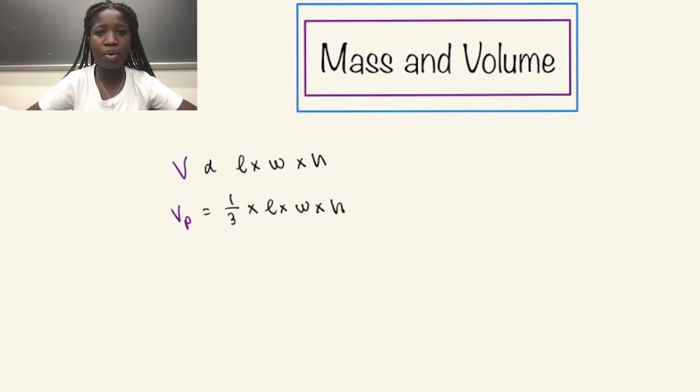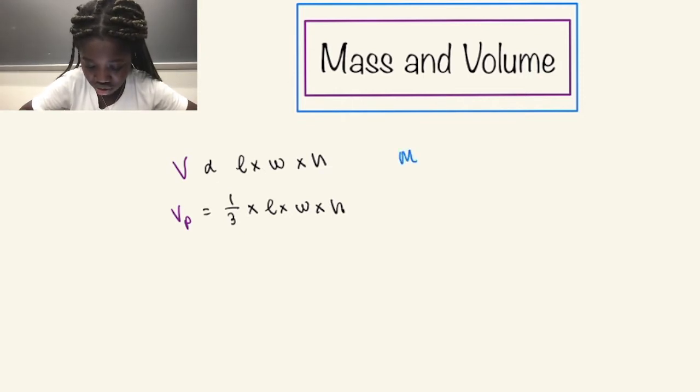But today we're focusing on mass and volume. Now mass depends on two things: the volume and the density. So mass is equal to the density times the volume.